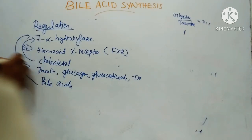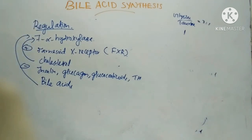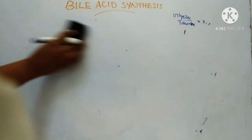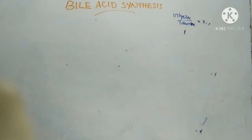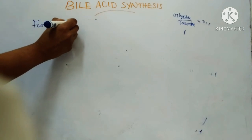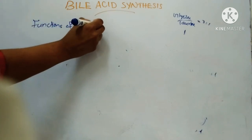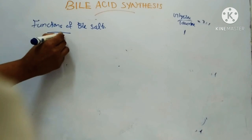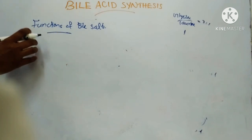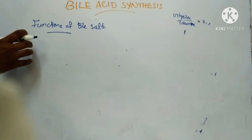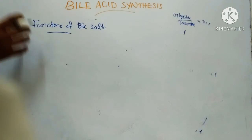Bile acids cause feedback inhibition on the enzyme 7-alpha-hydroxylase. So this is about the regulation of bile acid synthesis. Coming to the functions of these bile acids and bile salts.